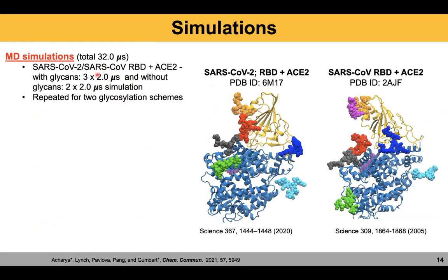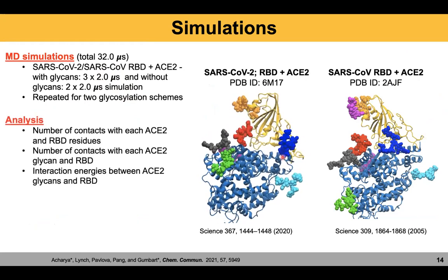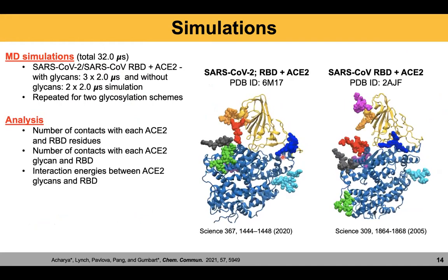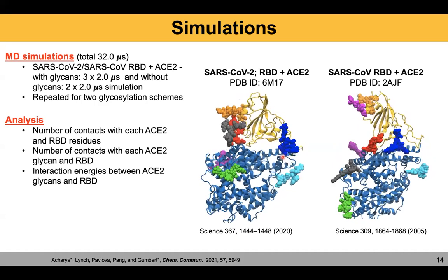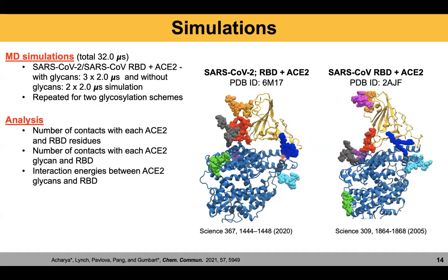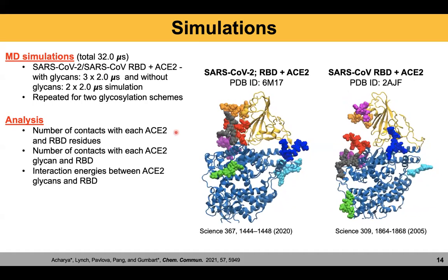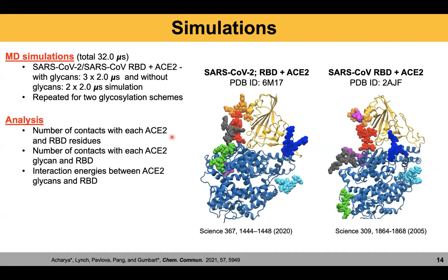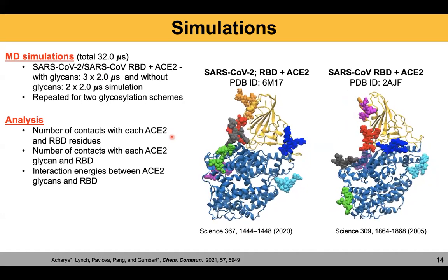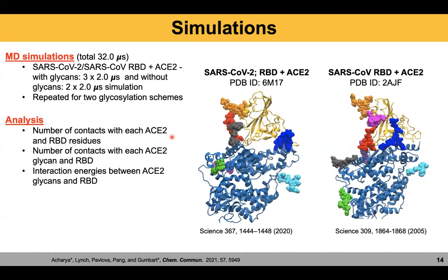In terms of analysis, we examined how closely different important parts of the system contact each other — calculating the number of contacts between S2 RBD residues, S2 glycan and RBD, and also calculating interaction energies, because not all contacts are favorable; some can be unfavorable. If there are unfavorable contacts, that would be reflected in the interaction energy.